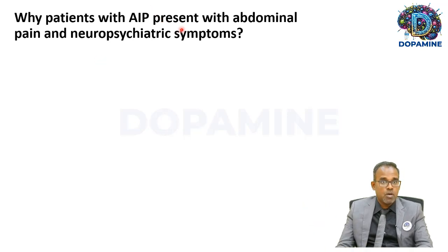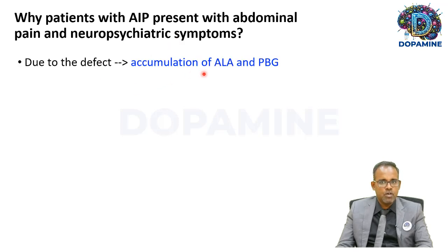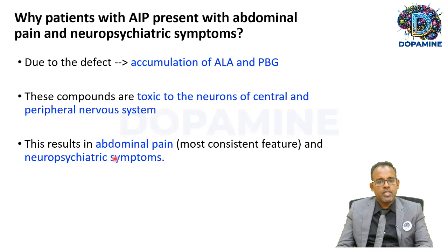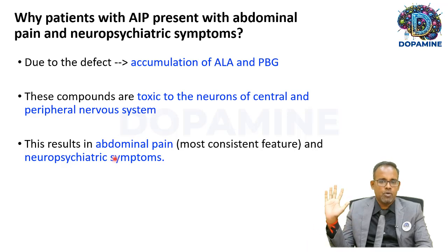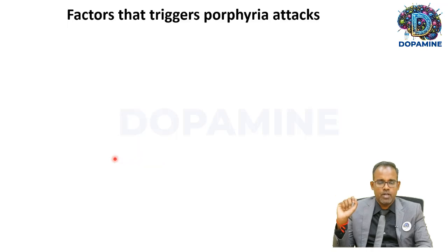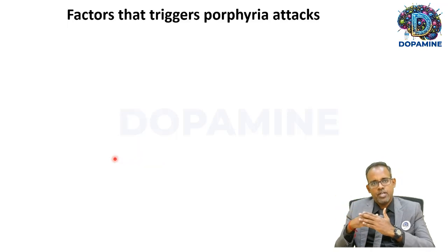In acute intermittent porphyria, because of the enzyme defect there is accumulation of ALA and PBG, which are toxic to neurons of both the central and peripheral nervous systems. This causes abdominal pain and neuropsychiatric symptoms — the classical features of acute porphyria. Unexplained abdominal pain and neuropsychiatric symptoms are classical features of acute porphyria.